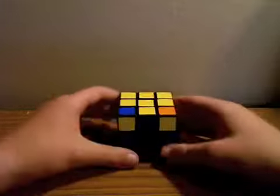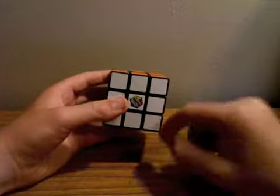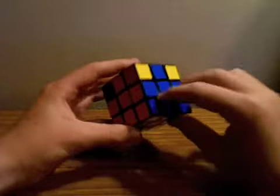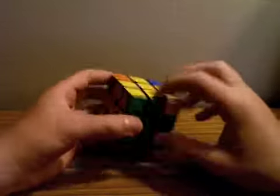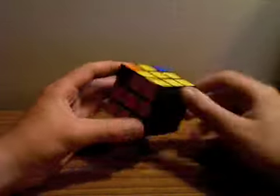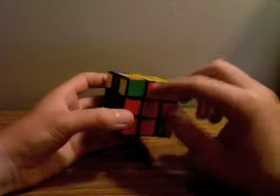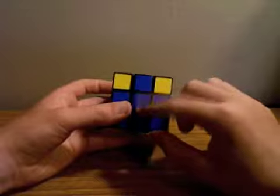Now, if you've done this case, your cube should look something like this. You should have the white face solved, first two layers solved, cross on the top, and all the sides, all the top sides permuted, or lined up with their centers.